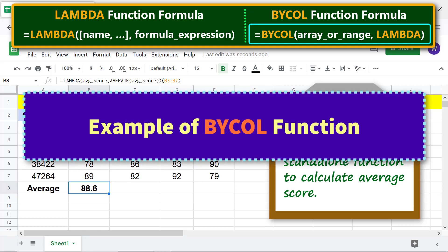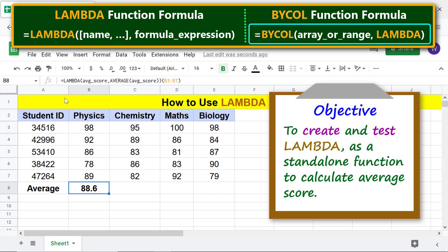Example of BYCOL function. Let's replace this standalone LAMBDA function formula with BYCOL LAMBDA combo function formula. Press delete to delete the formula. Now, type the equal to symbol, type B-Y and select BYCOL.